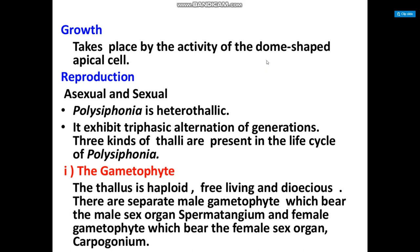Here I am talking about the reproduction of the alga Polysiphonia. Reproduction is performed by two types: asexual and sexual. Polysiphonia has a triphasic alternation of generation, with three kinds of thallus present in the life cycle.